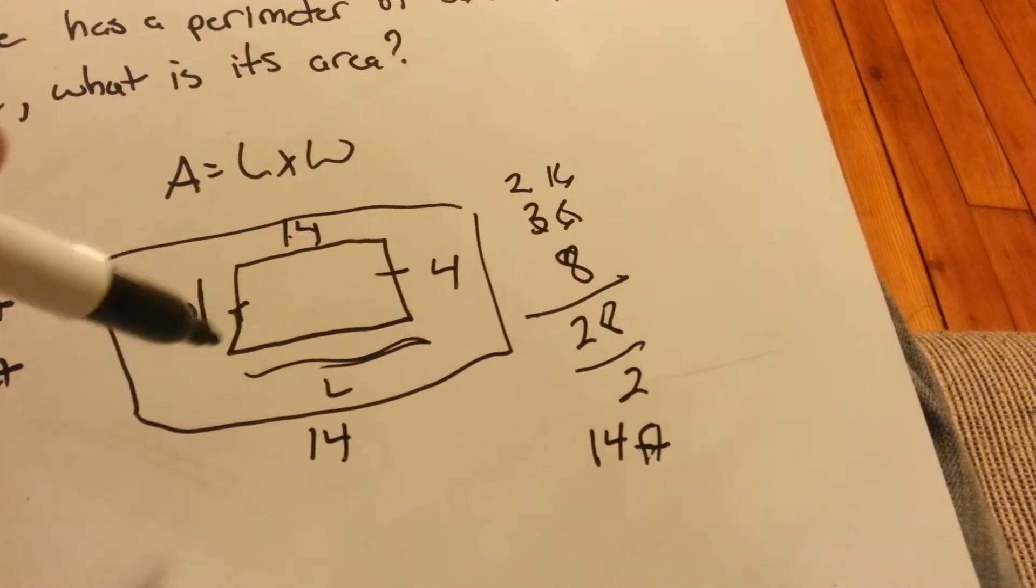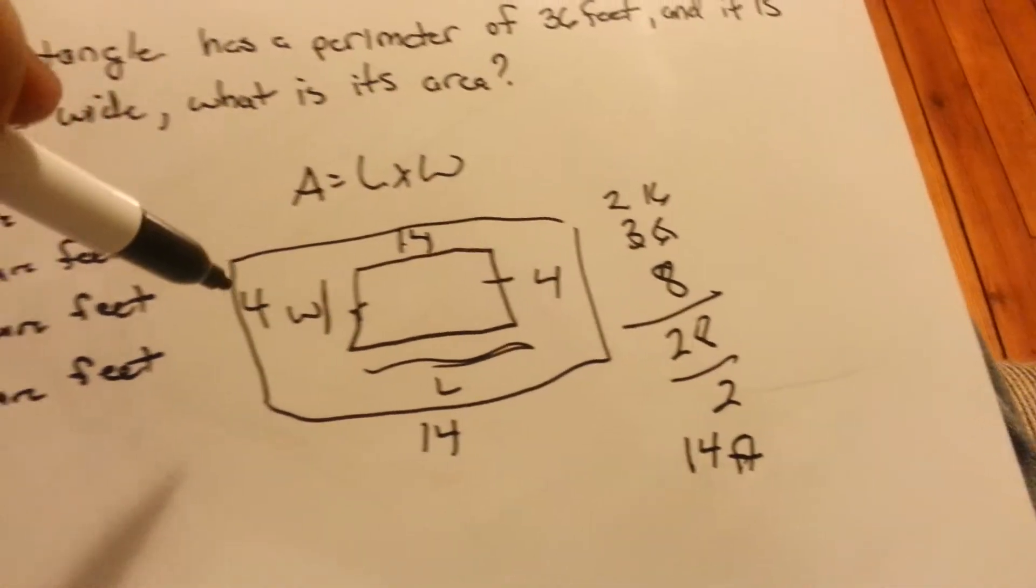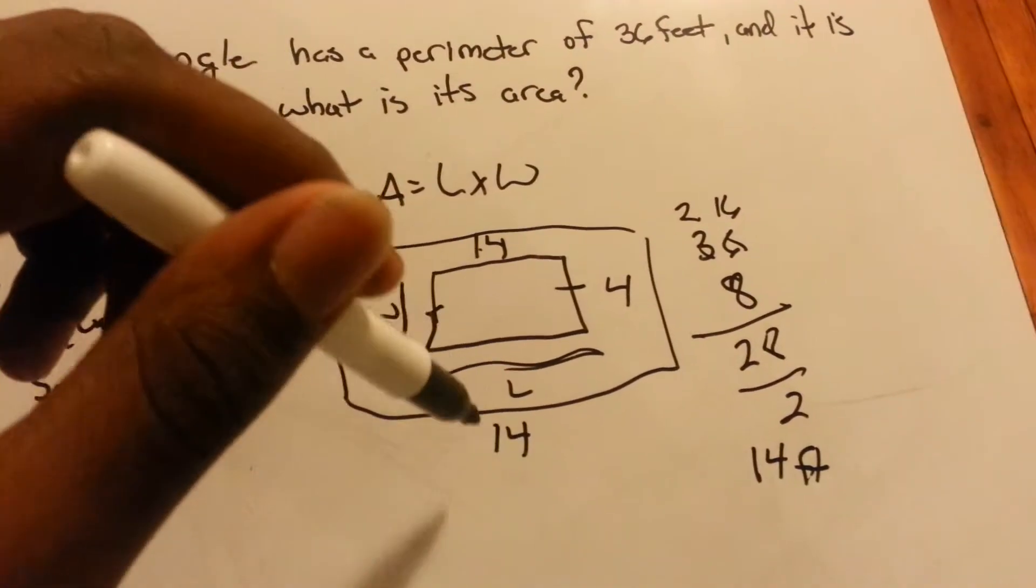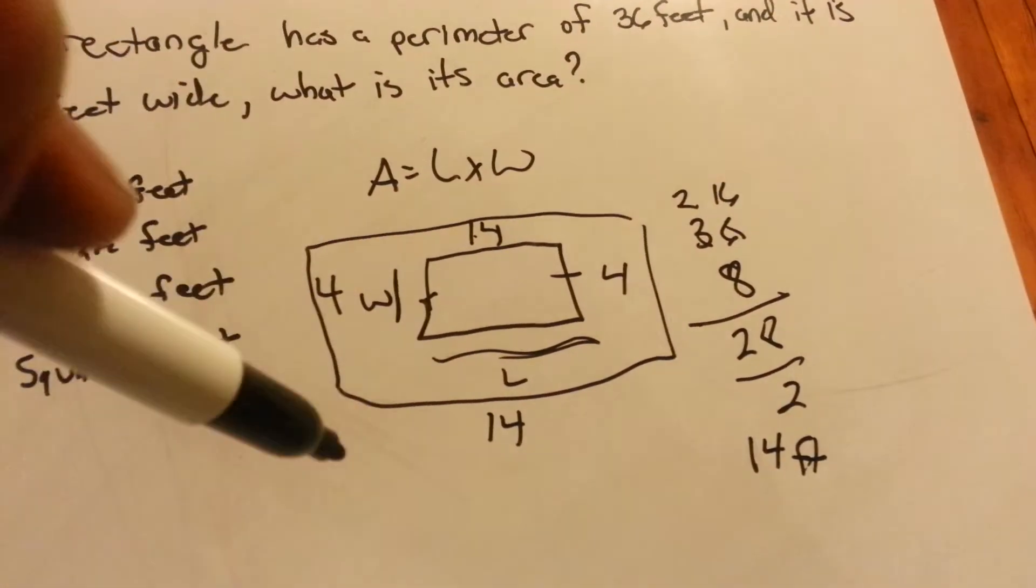So now we have the width of 4 feet, which they gave us originally, and the length that we figured out is 14 feet.